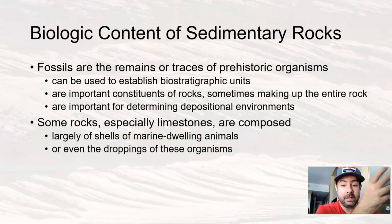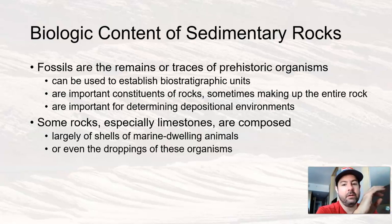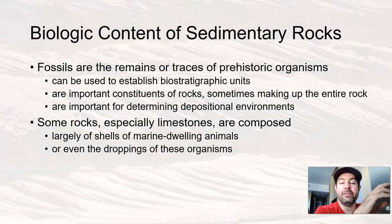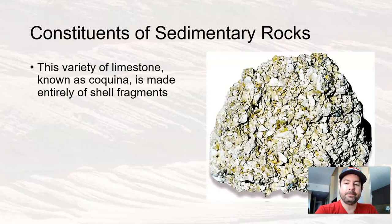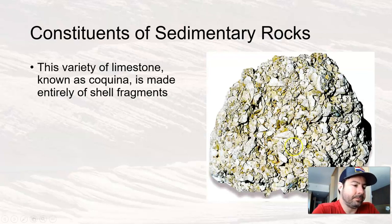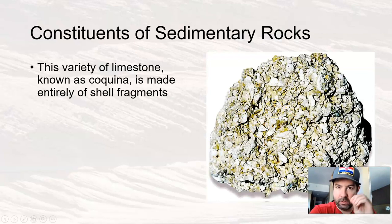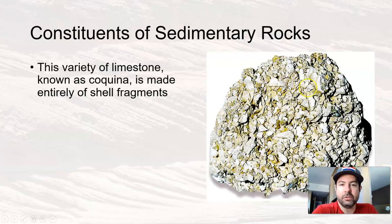Some rocks, like limestone — certain limestones, I should say — are composed largely of shells of ocean animals, marine-dwelling animals, or even the droppings of these organisms. One example is a type of limestone called coquina. Coquina is made entirely of cemented together shell fragments. All of these little pieces that you see are small pieces of shell fragment that have been cemented together. This is just a very zoomed-in view on a small rock, and it's a type of limestone called coquina.